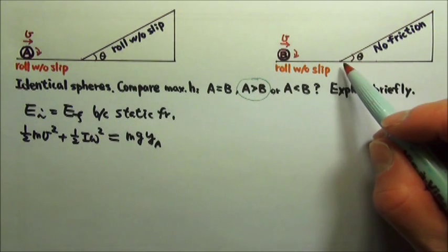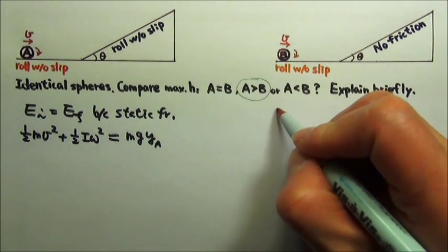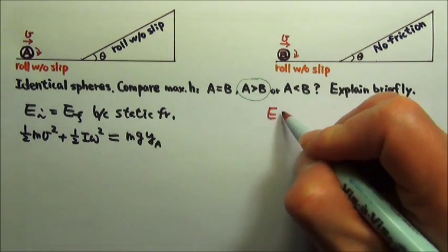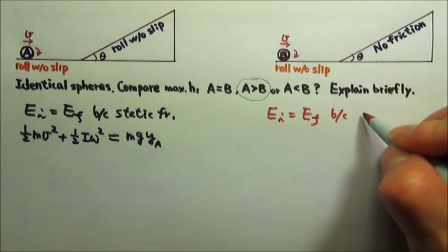For sphere B, there is no friction to take energy away, no friction to do work to turn mechanical energy into heat. So we also have the conservation of mechanical energy because there is no friction.